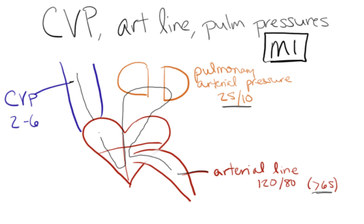So what happens when you've got a right ventricular MI? When you have ischemia to your right ventricle, if it's acute, all of a sudden your right ventricle becomes weak — it has decreased contractility. So for a given preload the cardiac output is less from that right ventricle. It's going to become less efficient at pumping blood into the lungs, and we're going to have a buildup of fluid and pressure in our right ventricle.